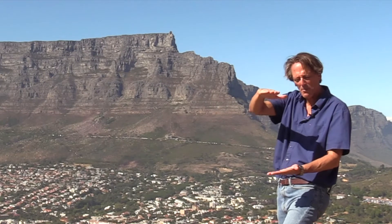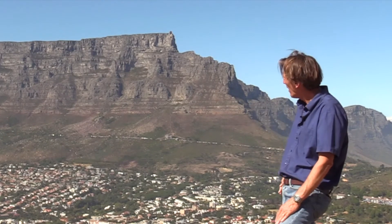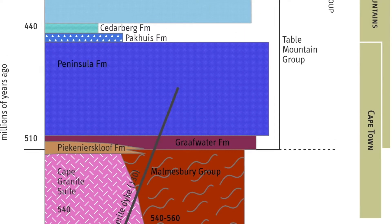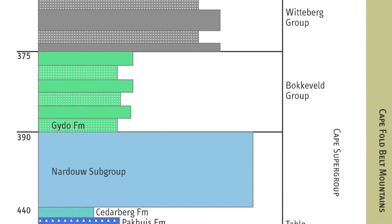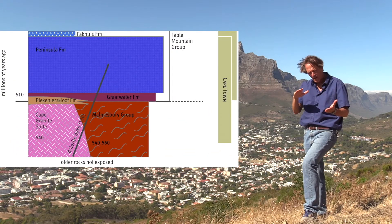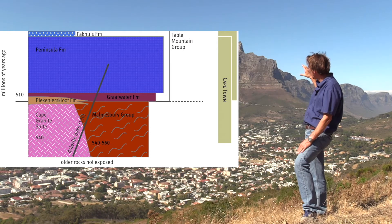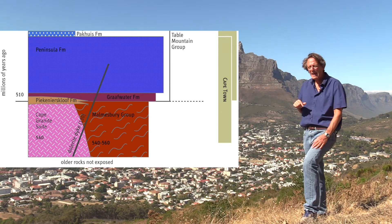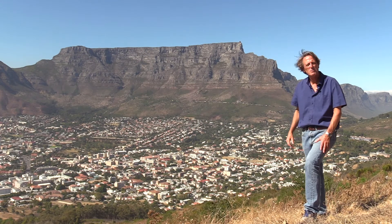These sediments simply piled up one on top of the other over many, many millions of years, forming a very thick deposit estimated in excess of 10 kilometers thick. What we have exposed in Table Mountain are just the lowest-most formations that were deposited — the oldest ones — and they together formed the Table Mountain group, estimated to be around 500 million years old.